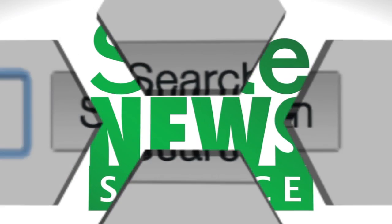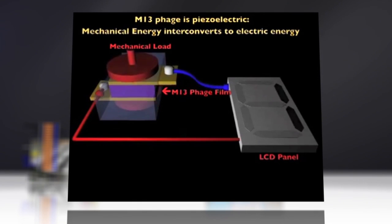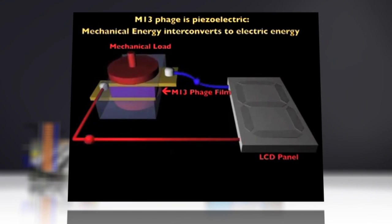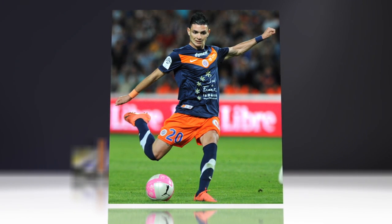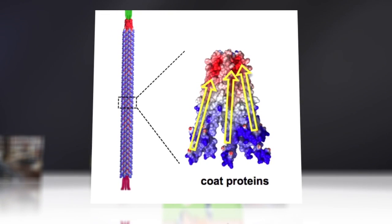Going viral just might have a new meaning. Scientists at Berkeley National Laboratory have found a new way to create electricity with a combination of human movements and amazingly benign viruses.